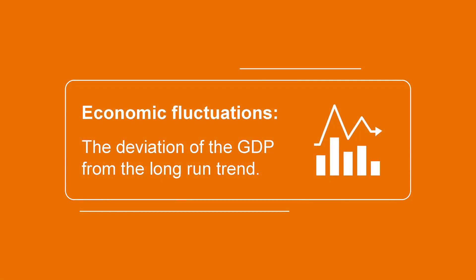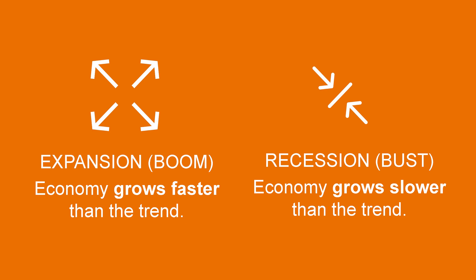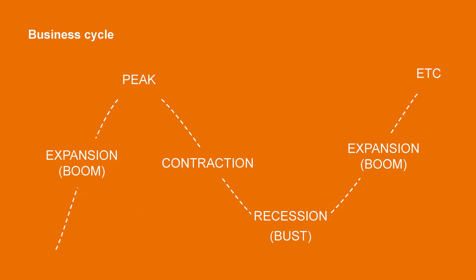To sum up, economic fluctuations are the deviation of the GDP from the long-run trend. The economy can grow faster than the trend — we will call it a period of expansion, or boom. The economy can also grow slower than the trend, or even decrease in size. We will call the situation when the growth rates of the economy are negative a recession, or bust. A prolonged and severe recession is called a depression.